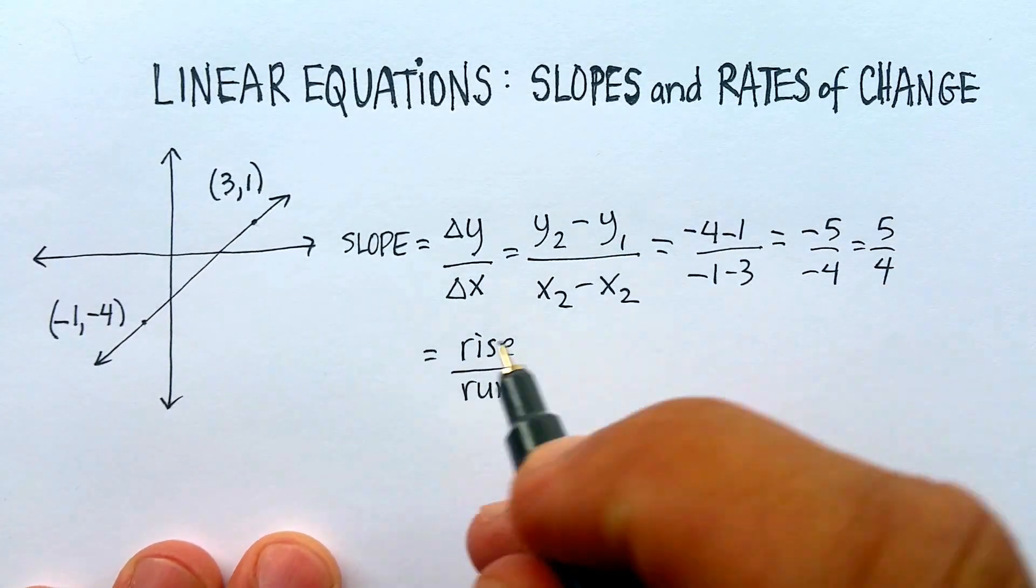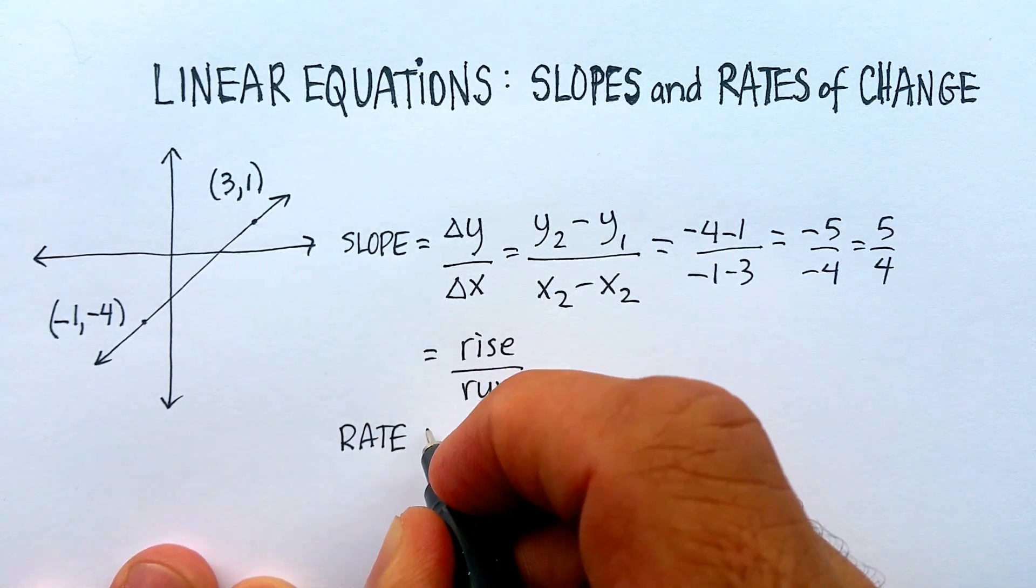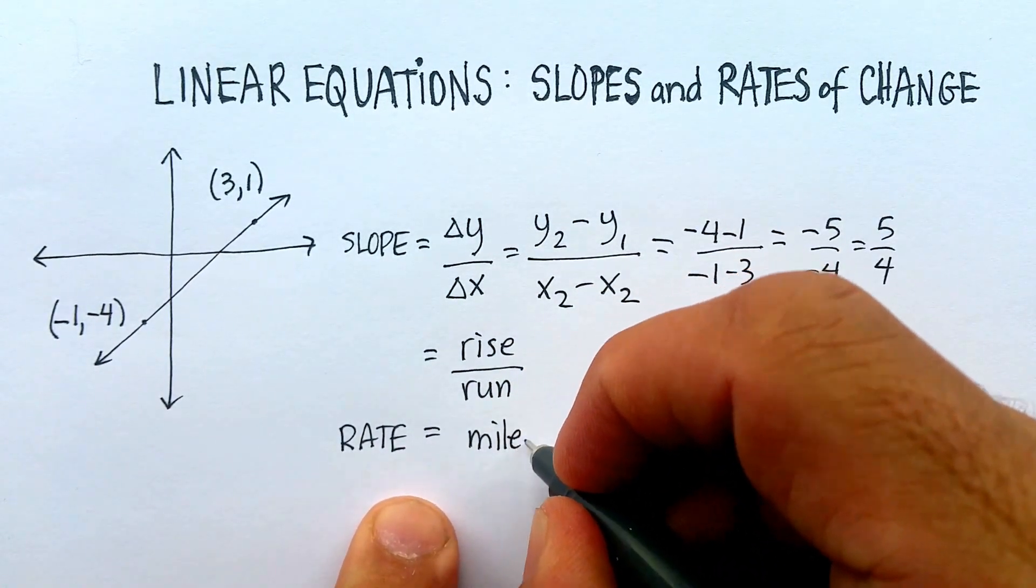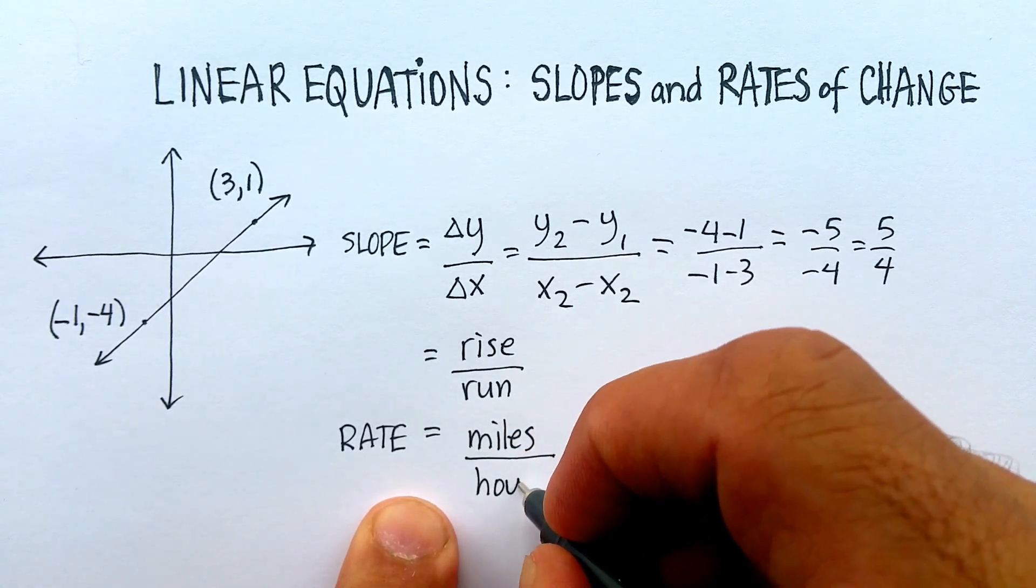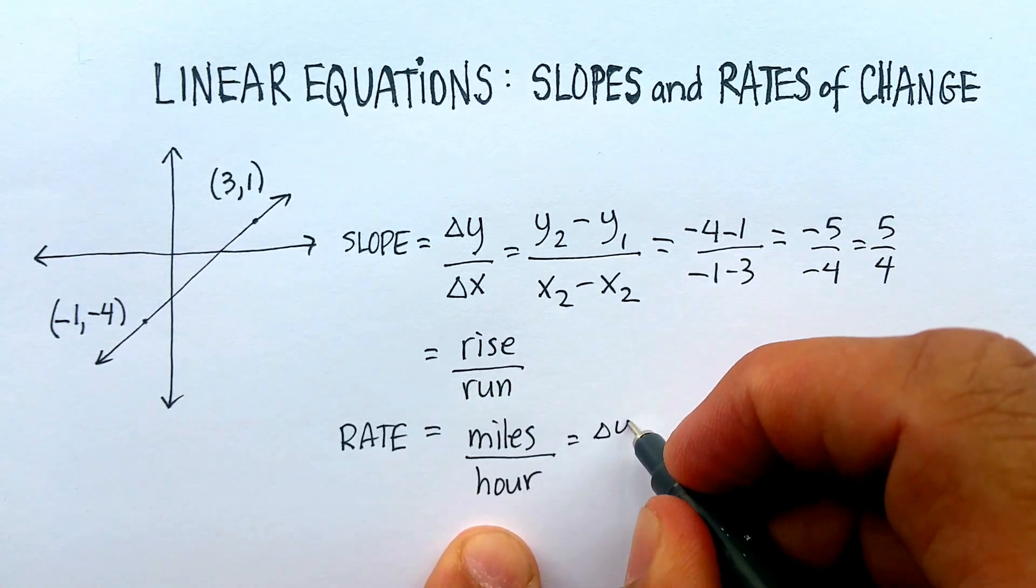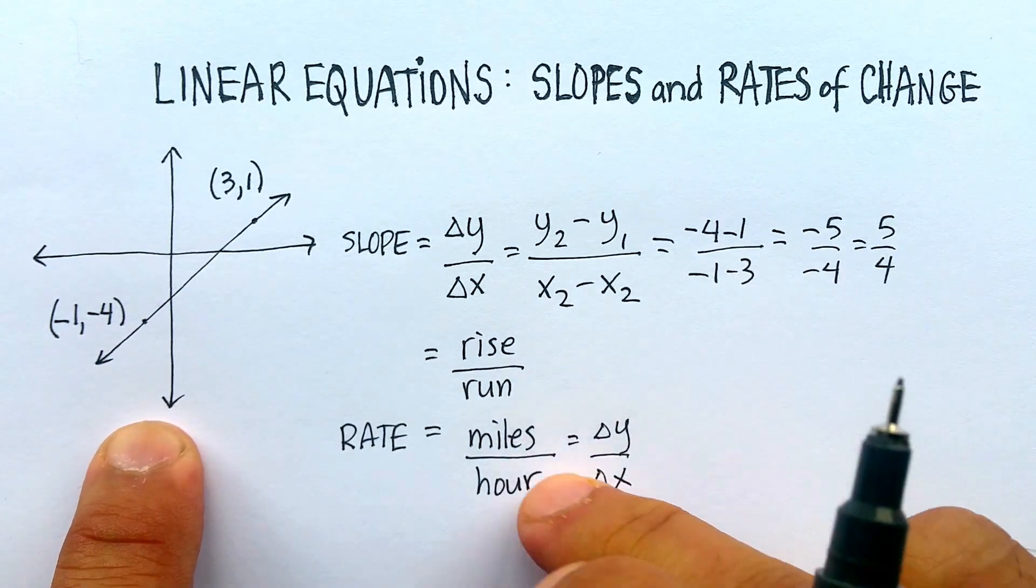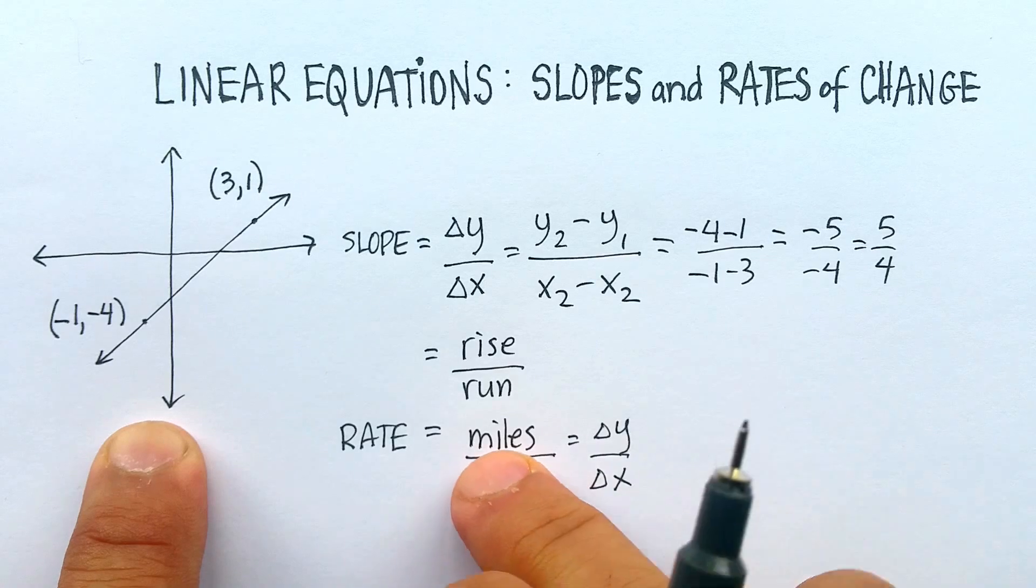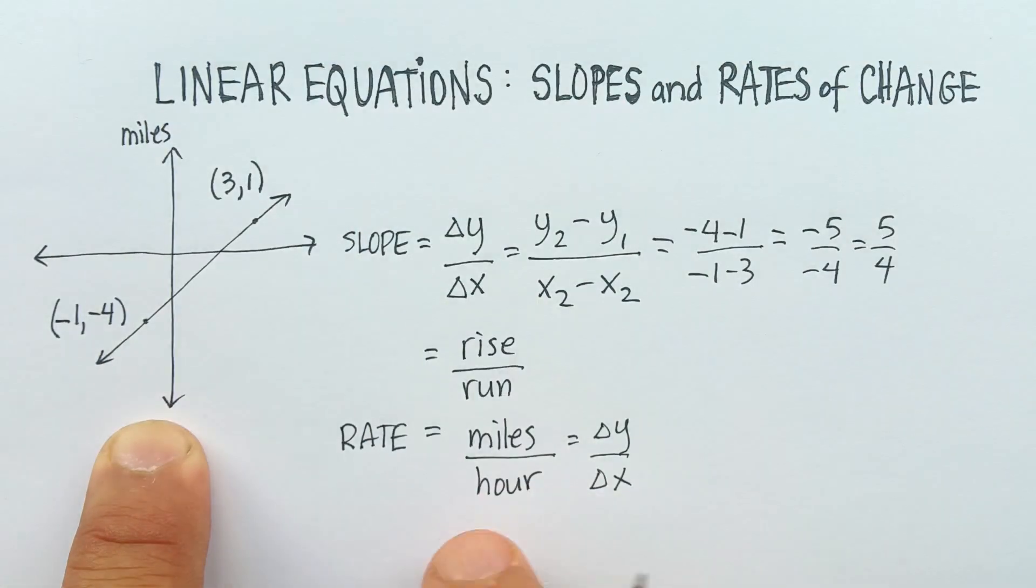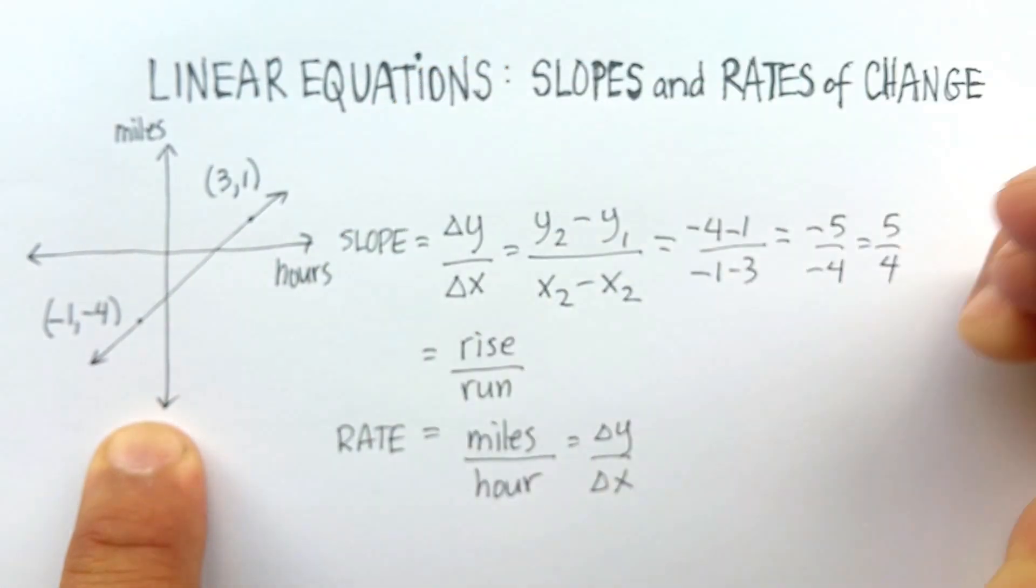Now, what may not be so obvious, though, is that this is also called a rate, or the rate of change. Now, when I say something like miles per hour, I am basically helping you identify what the y-axis is and what the x-axis is. If you were to go over here, and if you wanted to find something in miles per hour, I would know that my y-axis would be the miles, and my x-axis would be the hours.